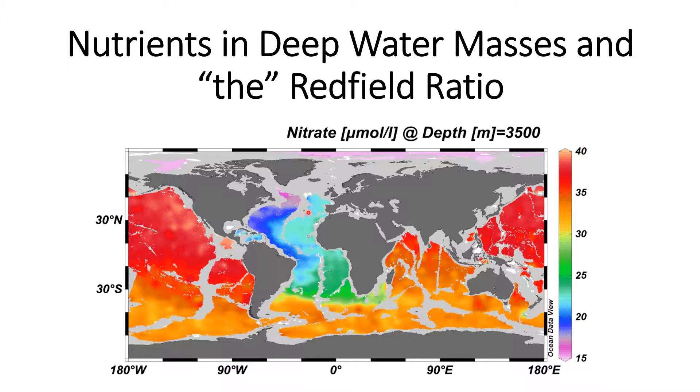From the lectures, you might remember that deep water forms in the North Atlantic and also in the Southern Ocean around Antarctica. This brings relatively nutrient-poor water from the surface, with low concentrations of nutrients because in the surface ocean nutrients are used up by life. When you export that water to depth, the deep water starts out with a low concentration.